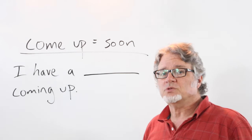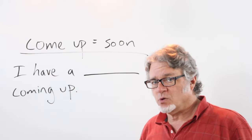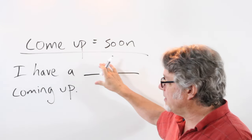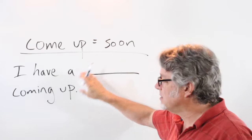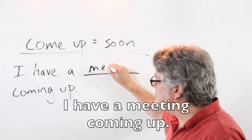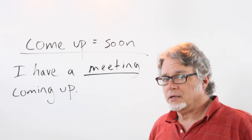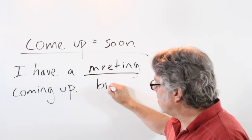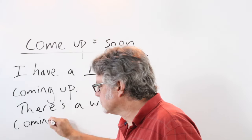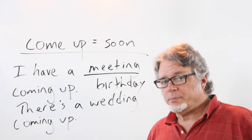When you want to talk about something that is happening soon in your life, say I have a and then here's the activity coming up. I have a meeting coming up. I have a birthday coming up. There's a wedding coming up.